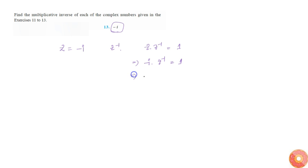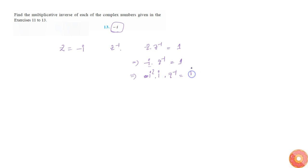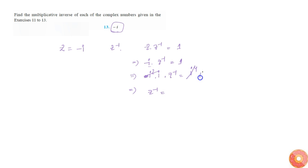Now we can say that this is minus i. For minus 1, I can write as i square, so minus i becomes i square into i, which equals i cube. Then z inverse is equal to i power 4 divided by i cube, since I can write 1 as i power 4.